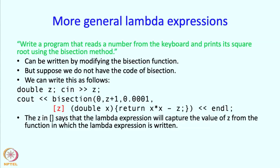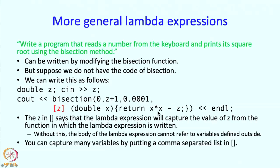And therefore just to indicate that this variable is being captured from outside inside the square brackets we have to put in z. So this says to the compiler that look, I am going to use the value of the variable z which has been defined outside and now I can use that variable inside over here. So the z inside those square brackets says that the lambda expression will capture, that is the technical term used, the value of z from the function in which the lambda expression is written. So this lambda expression is written in this code fragment which is a part of the main function and z is a variable defined in the main function and I can use the value of it. The value of it will be substituted over here and then this function will be constructed, and then passed to bisection. And without this the body of the lambda expression cannot refer to variables which are defined outside. And furthermore I should say that if I want to capture more variables I can just put them here separated by commas.